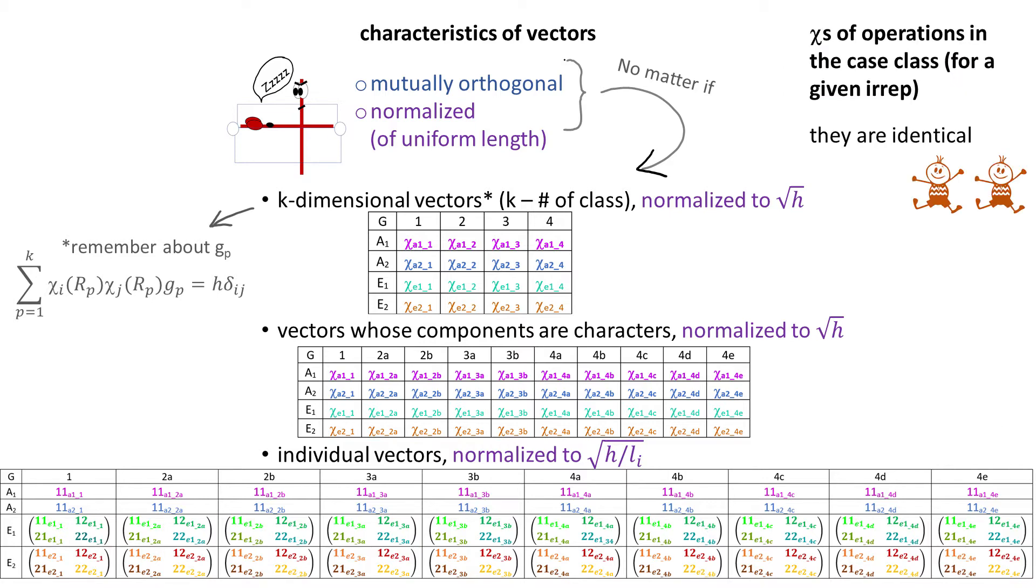The second important thing is that the characters of all matrices belonging to operations in the same class are identical, obviously for a given EREP. That property allows us to write a character table in a much compact way. These three tables are for some group g and you can see that we can go down from 10 to just 4 columns.